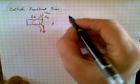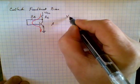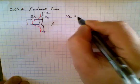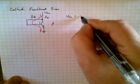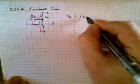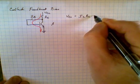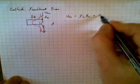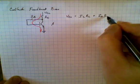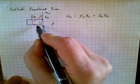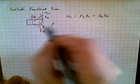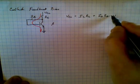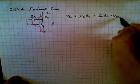So we'll use that. Vcc therefore is equal to the sum of all the voltage drops, and that would be Ic times Rc plus the voltage drop across Ib, so that will be Ib times Rb, plus the voltage drop from base to emitter, Vbe.